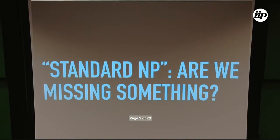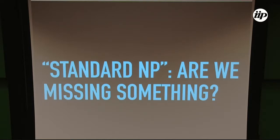Let's start from the beyond standard model, standard new physics — are we missing something? By 'standard new physics' I mean old models of new physics, like leptoquarks, Z prime, and so on, which have been searched extensively in the data since LEP and even before, and which can have some signatures that we are still not looking for. Let me show you an example.